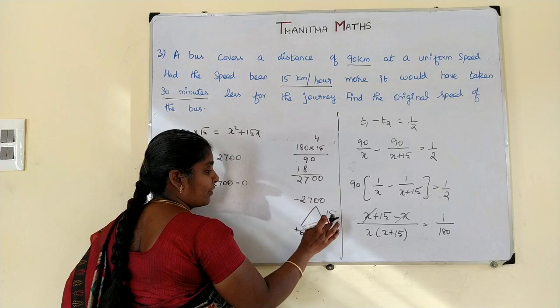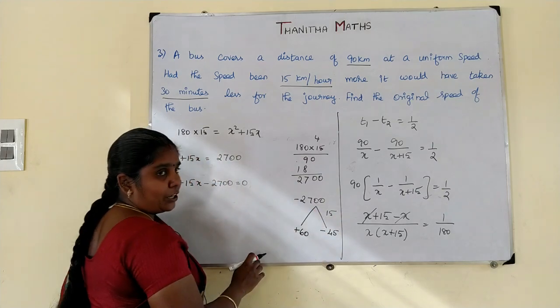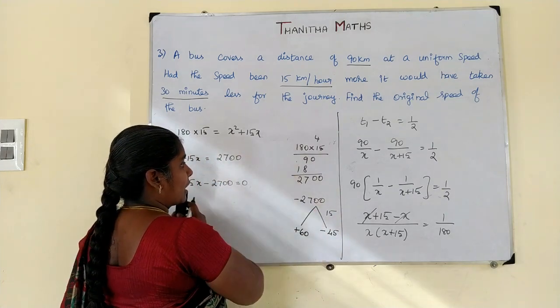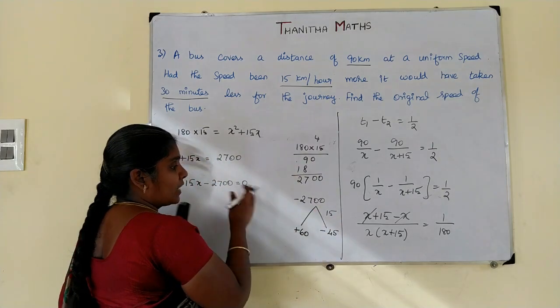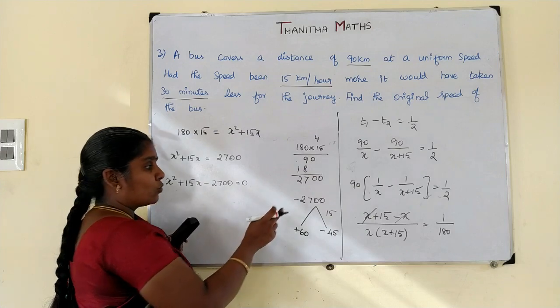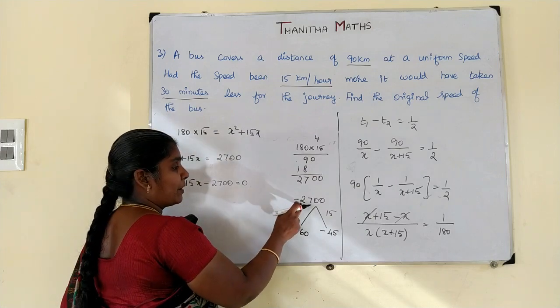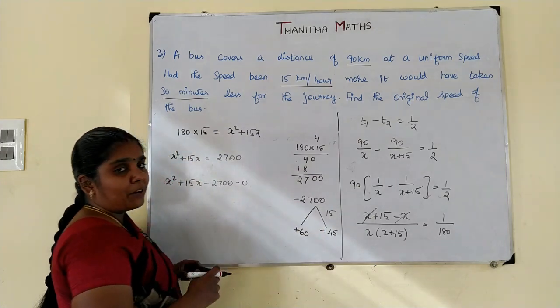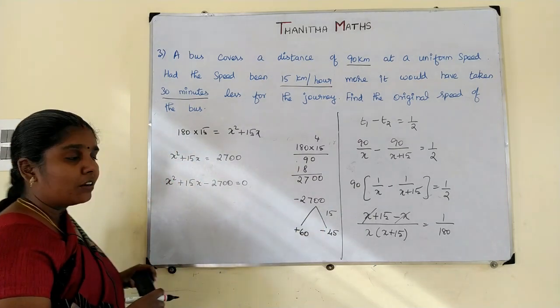We find 60 and 45: 60 minus 45 equals 15, and 60 times 45 equals 2700. So the factorization works and we form the factors.